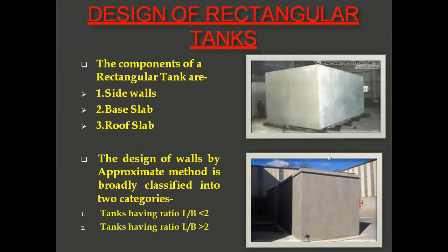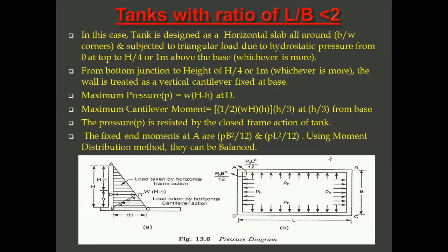A typical example of a water tank resting on ground is shown in the photograph. For a rectangular water tank resting on ground, the components are the sidewall, base slab, and roof slab. Design of the wall by the approximate method is broadly classified into two categories: tanks having a ratio L/B less than two, and tanks having L/B greater than two, where L is the length and B is the width.